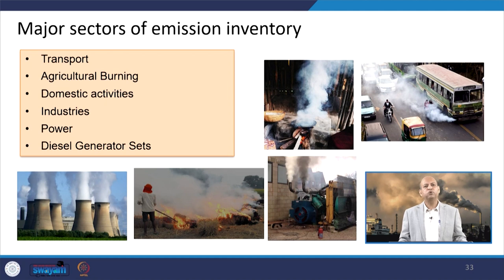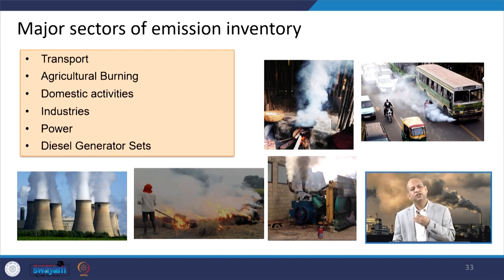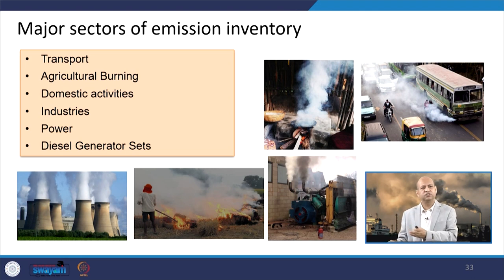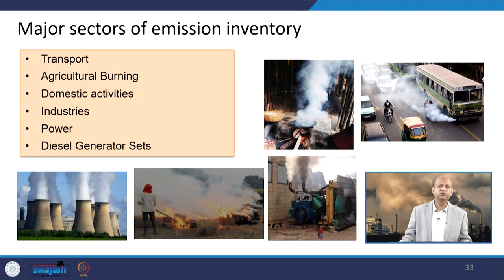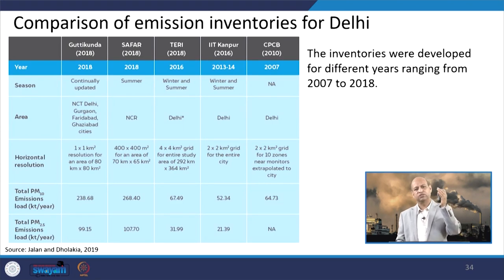For major sectors of emission inventory — transport, agriculture burning, domestic activities, industries, power, diesel generators — you can also add construction activities or waste burning, whatever activity you want to include. These are just sample activities; those sectors will be discussed in detail later on.